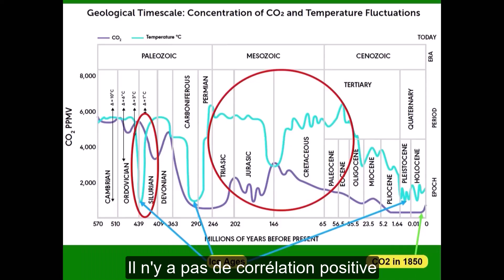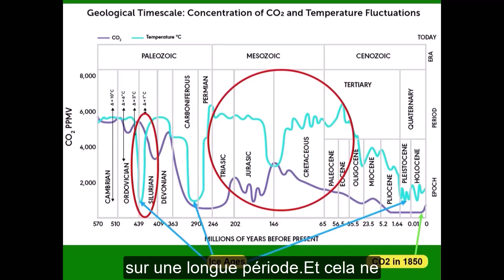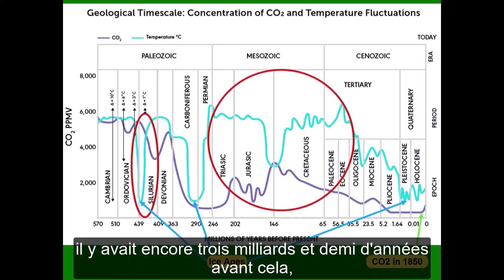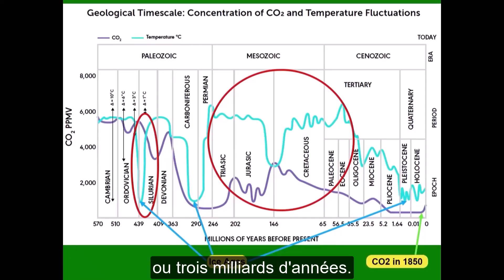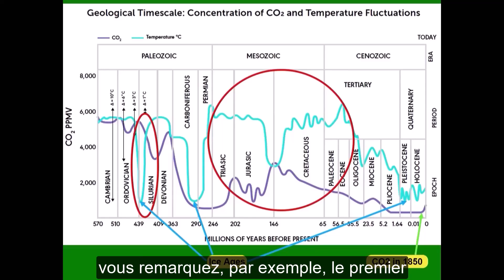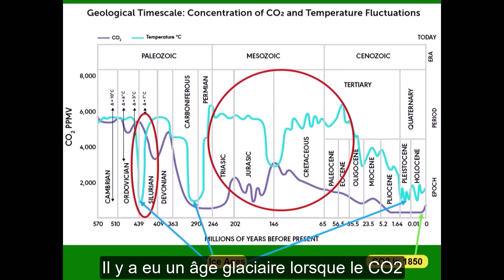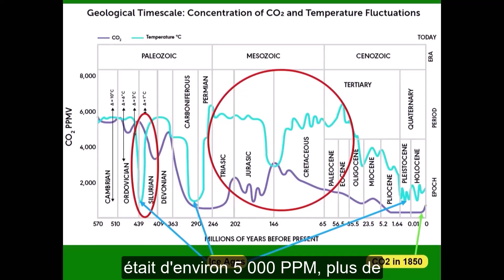There is not a positive correlation between CO2 and temperature over the long-term history. And this is only the last half billion years — there were three billion years where there was life before that. For example, the first little oval red thing — that's the Silurian Ice Age. There was an ice age when CO2 was at approximately 5,000 ppm, more than ten times what it is today.